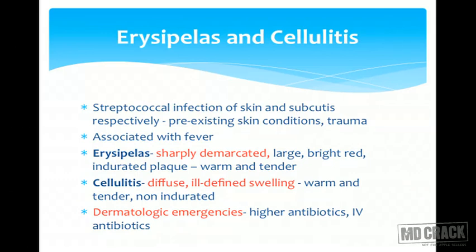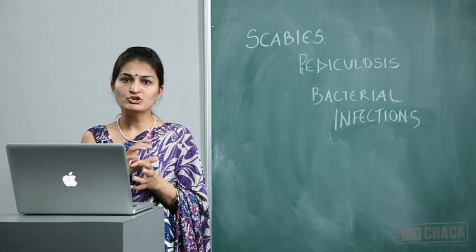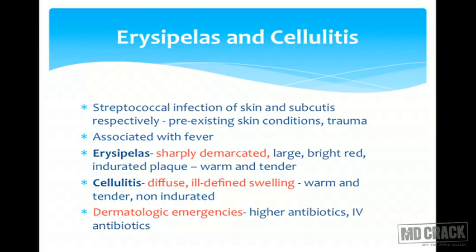Erysipelas and cellulitis are discussed together — both are streptococcal infections of the skin and subcutaneous tissue respectively. Bacteria gain entry through a cut, pre-existing skin condition, or trauma, and both conditions are associated with fever. In erysipelas, being more superficial, the patient presents with a sharply demarcated, large bright red indurated plaque which is warm and tender. In cellulitis, there is no sharp demarcation — it is diffuse, ill-defined swelling with signs of inflammation and is non-indurated. Both are dermatological emergencies requiring admission and high-dose antibiotics — oral or IV — as untreated infection can lead to necrotizing fasciitis and septicemia.